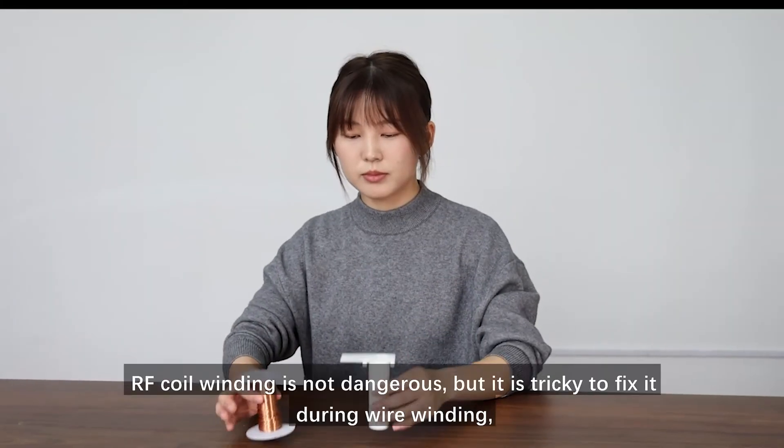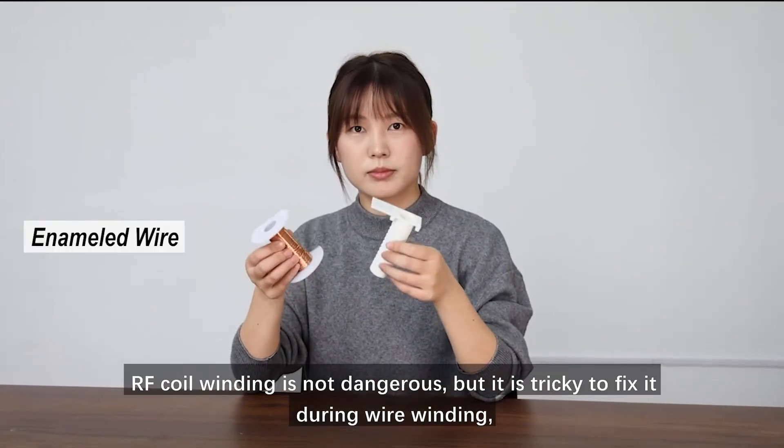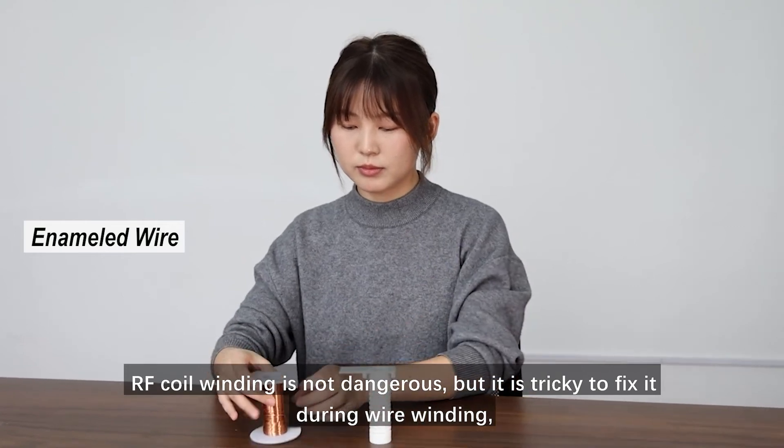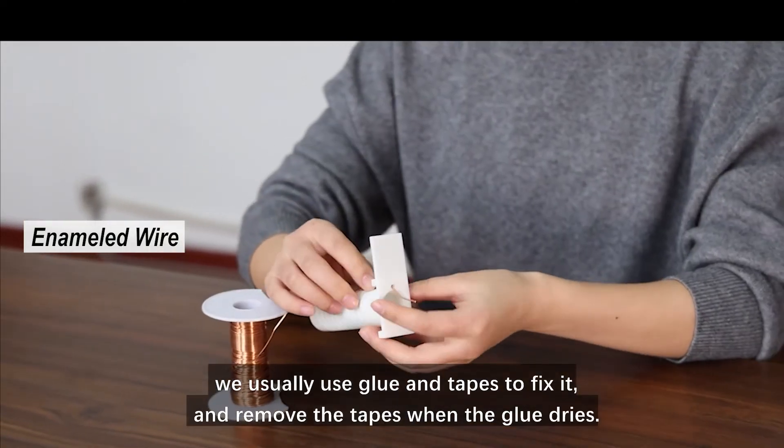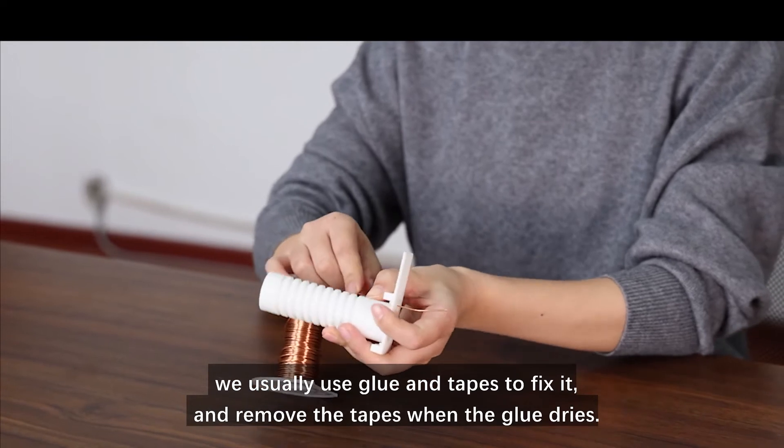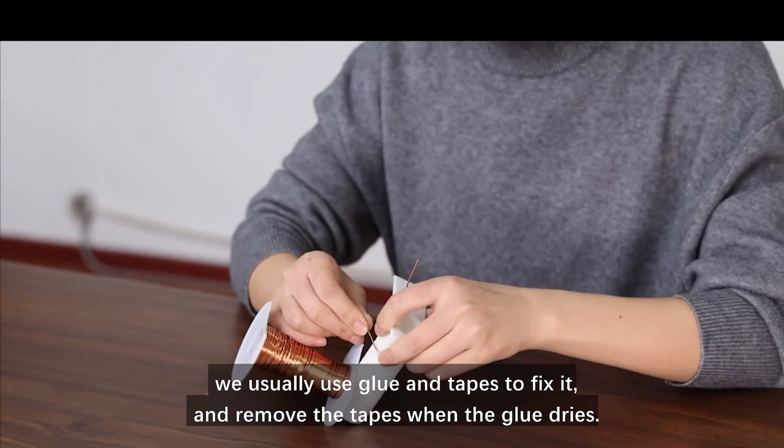RF coil winding is not dangerous, but it is tricky to fix it while winding. We usually use glue and tape to fix it and remove the tape when the glue dries.